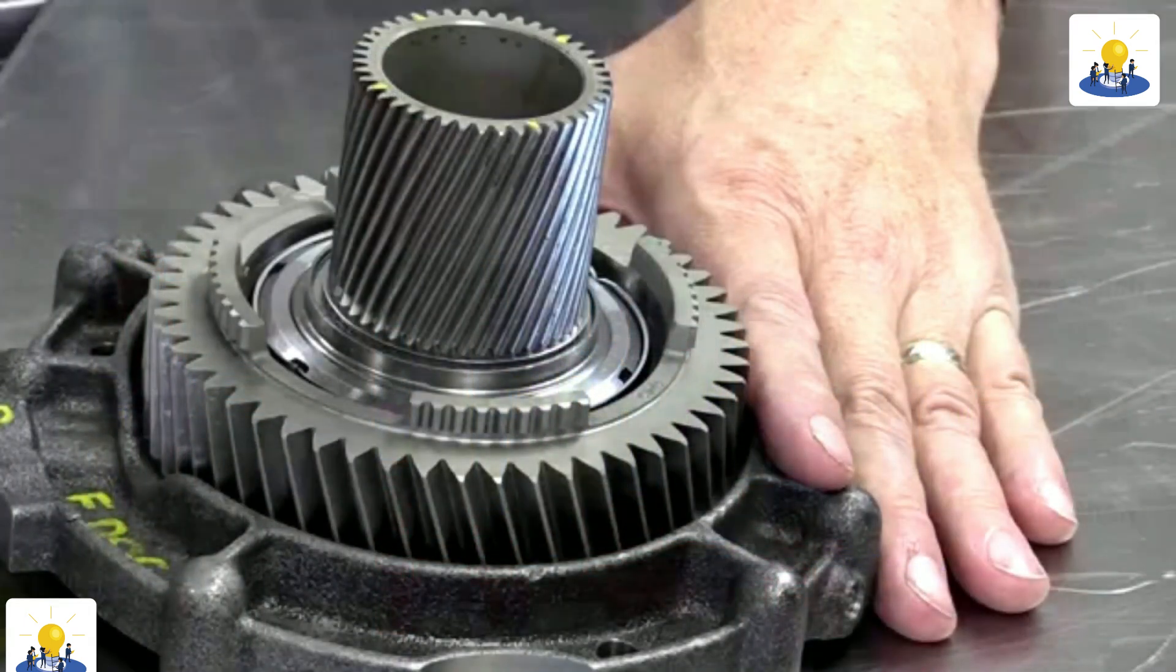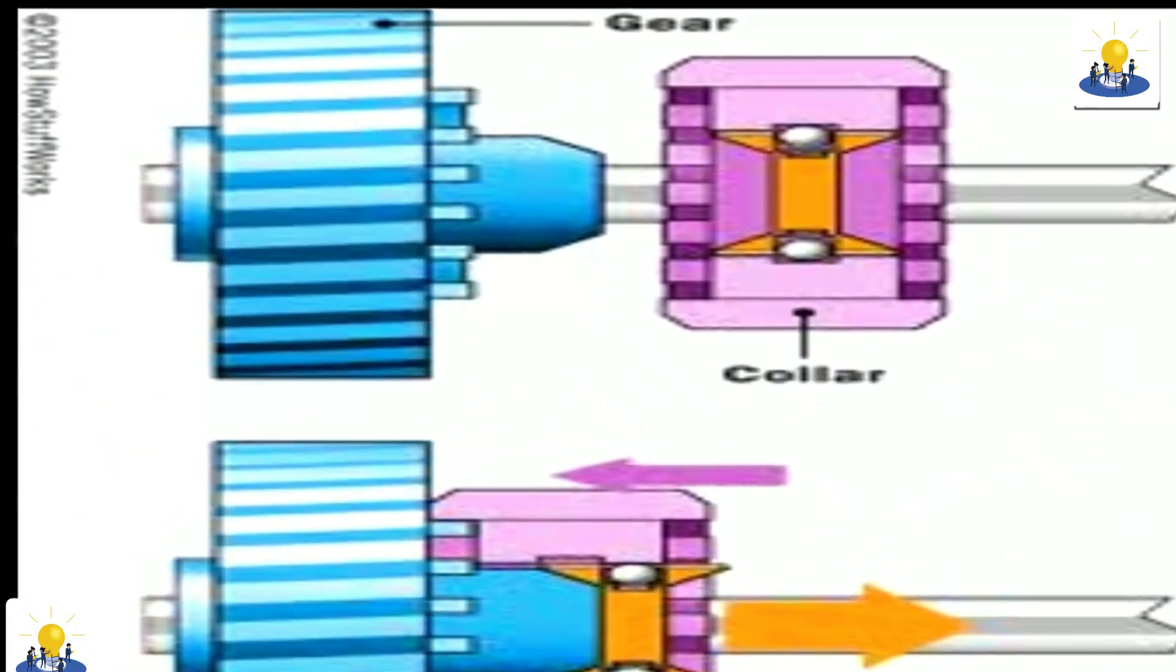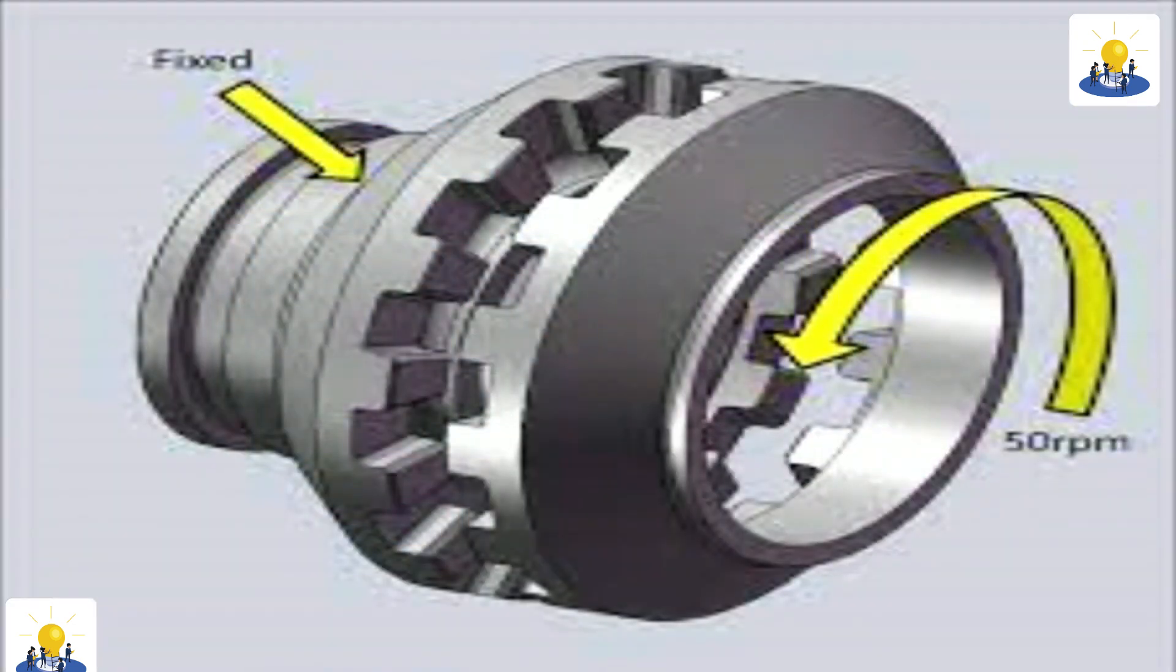Unlike some other types of clutches, such as the foot-operated clutch of a manual transmission car, a dog clutch provides non-slip coupling and is not suited to intentional slipping.